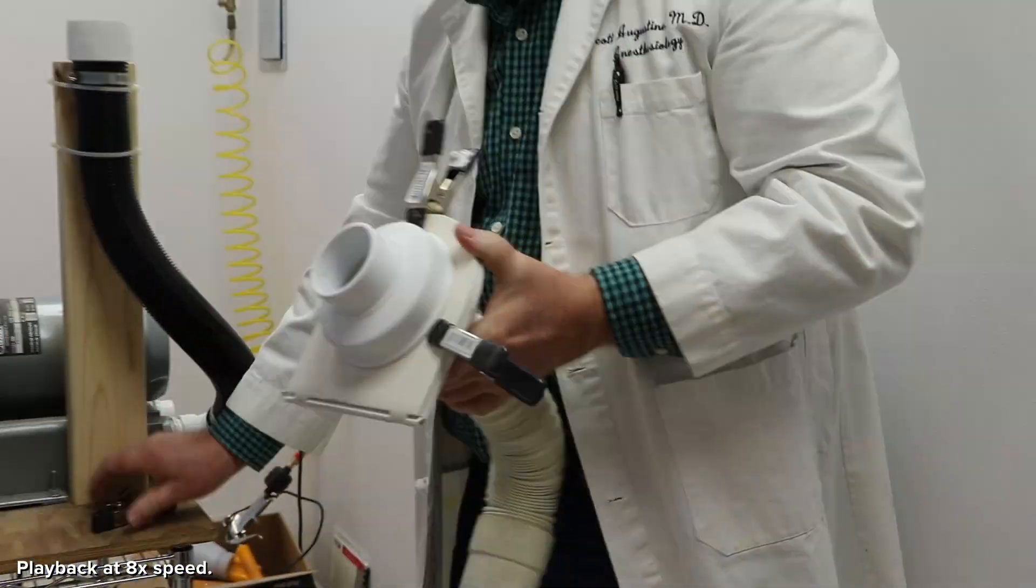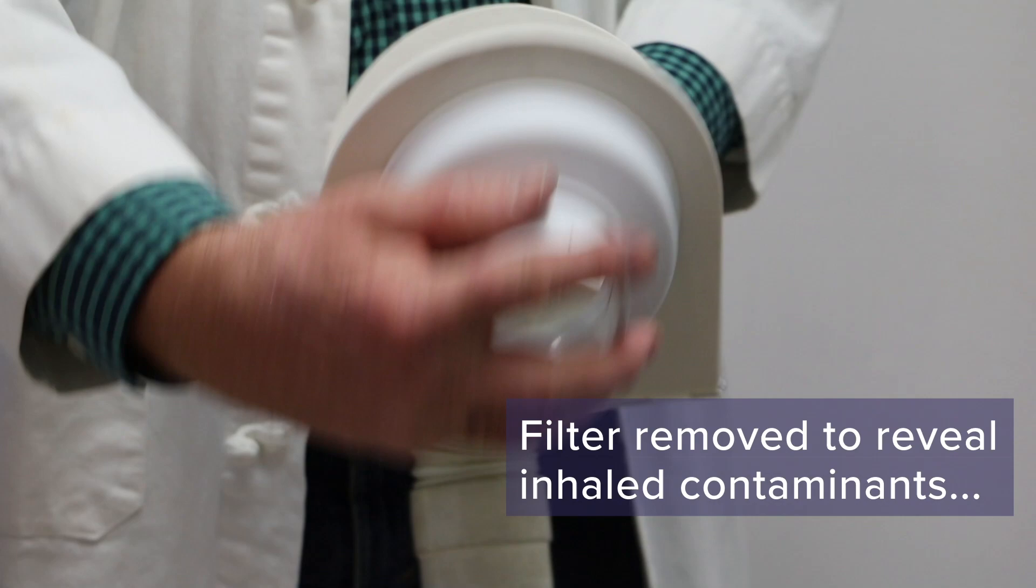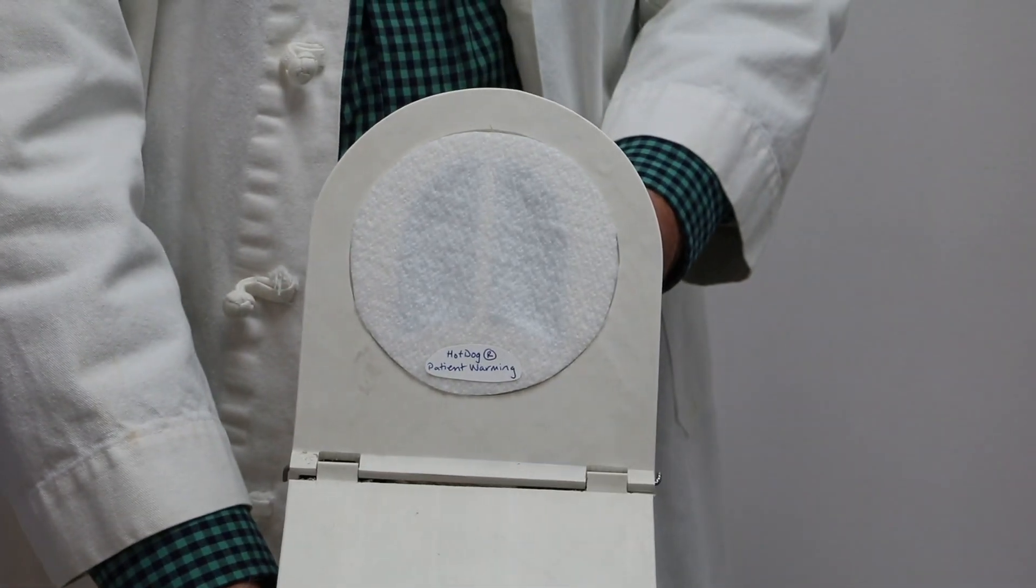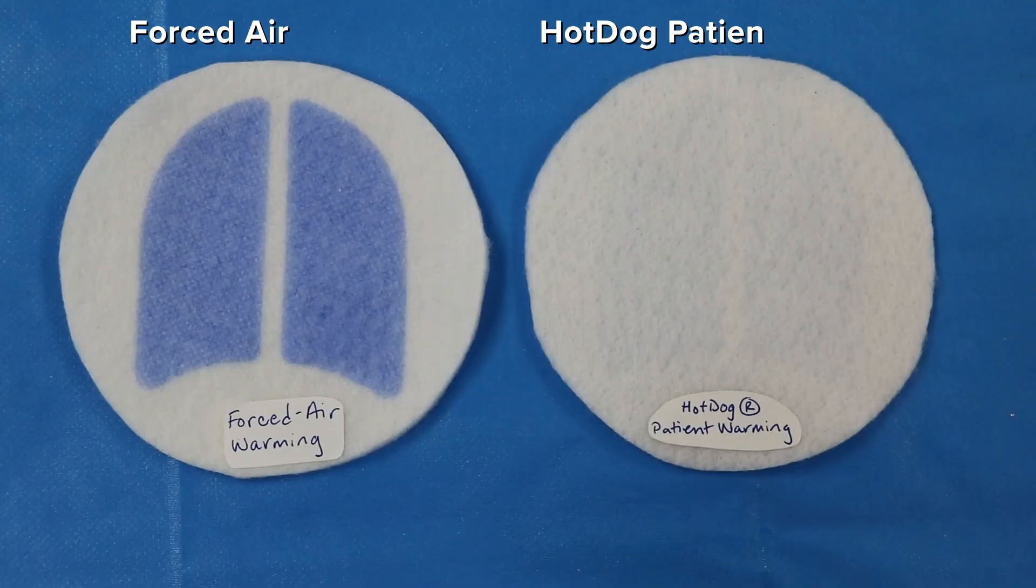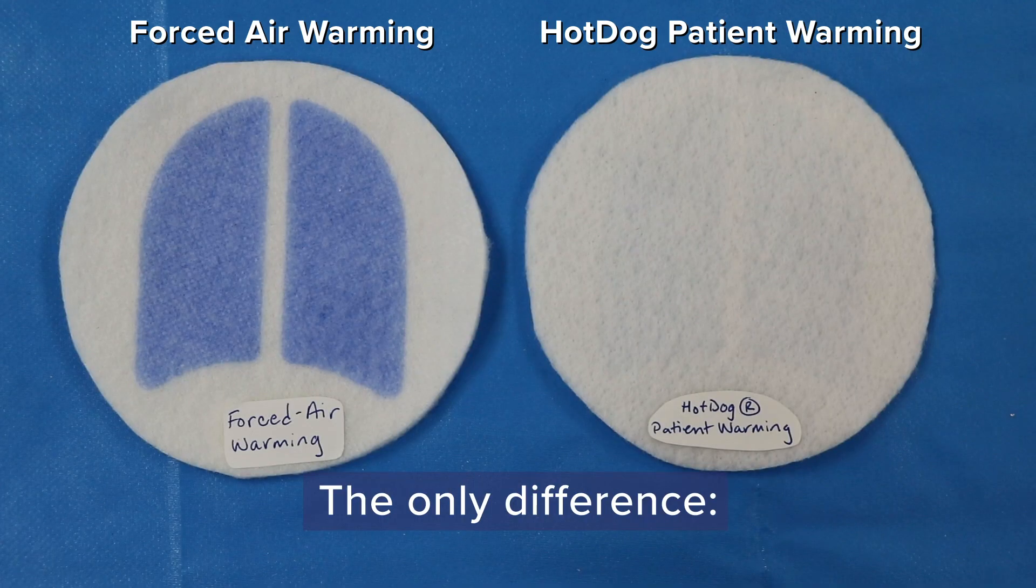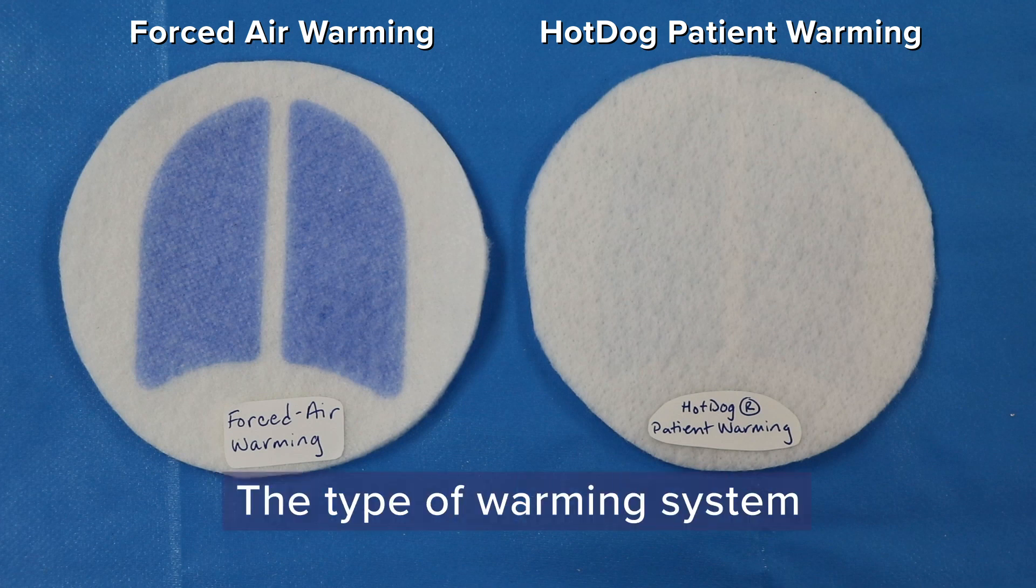The filter is removed to reveal inhaled contaminants. With the hot dog system on, the lungs remain virtually clear. What caused the drastic difference in the amount of inhaled particles? The conditions in each group were identical except for the type of warming system used.